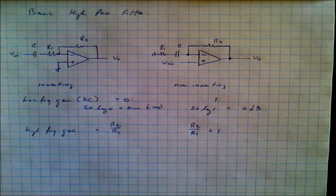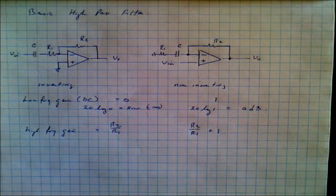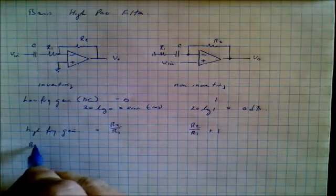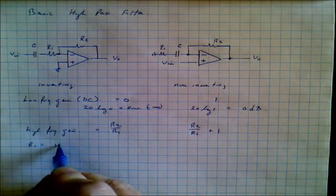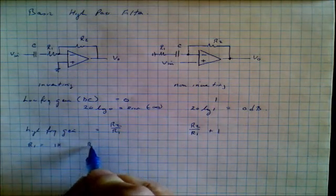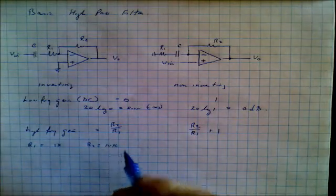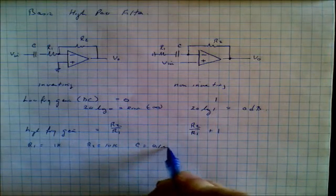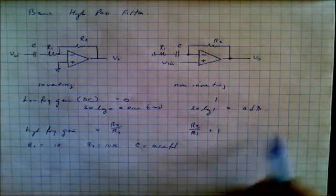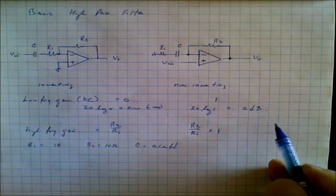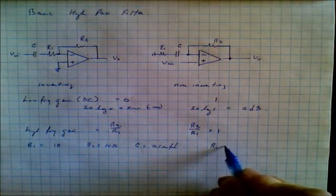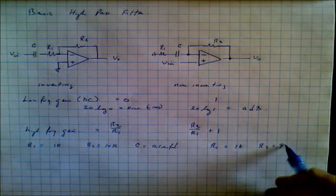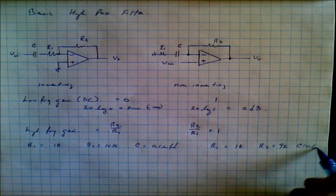So now let's see how these circuits work when we plot them and put in some real values. So for this circuit over here we're going to let R1 equal 1k like we did before. Let R2 equal 10k. We'll let C equal 0.1 microfarads. And in this circuit over here we're going to let R1 also equal 1k. R2 equal 9k. And C equal 0.1 microfarads as we did before.